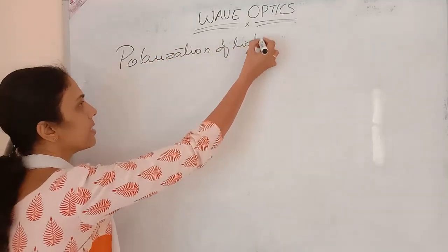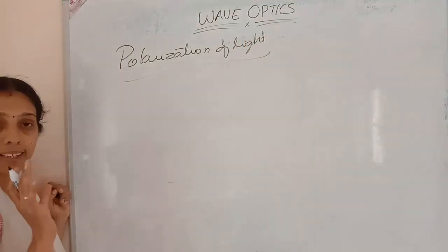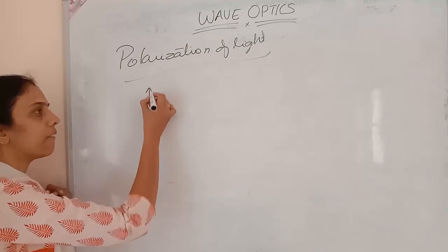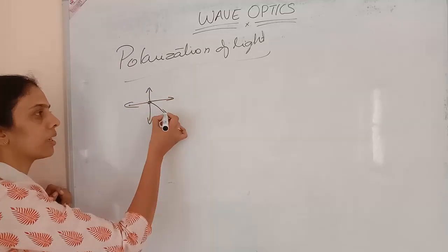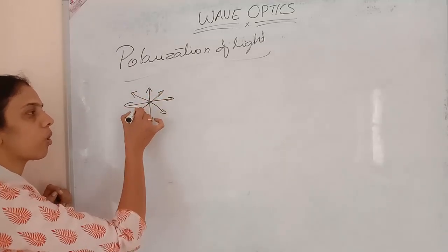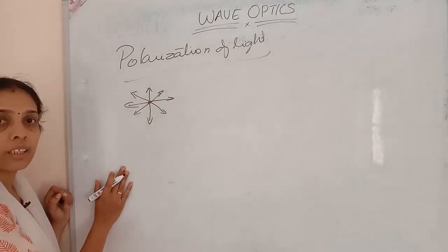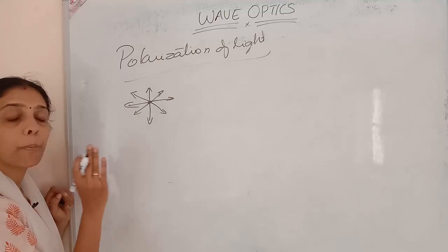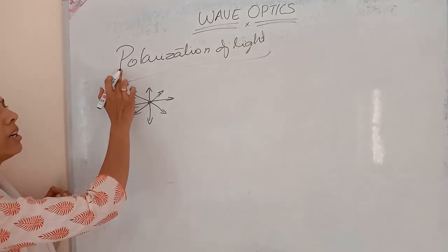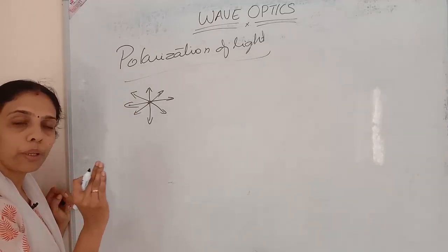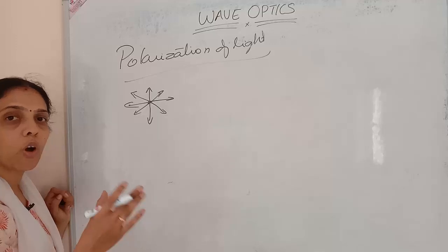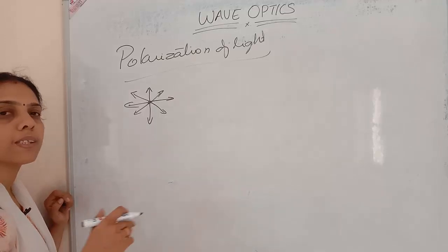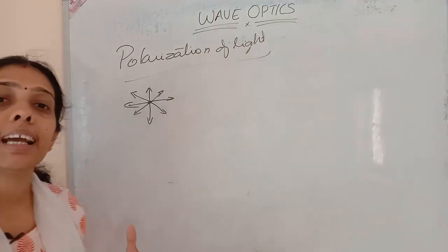Polarization of light means: if we are considering a light wave, a source of light will be vibrating in all directions. If I am restricting those vibrations to a single particular direction, that is called polarization. The phenomenon of restricting the vibrations of light into a single direction is called polarization. The after-effect of polarization is that the intensity of light will be reduced.